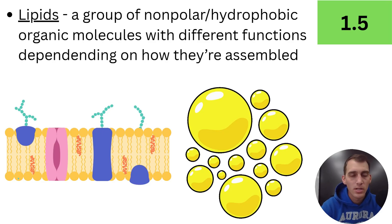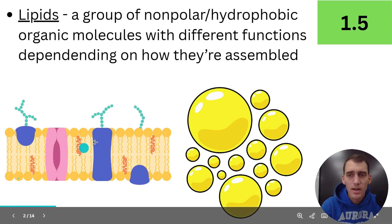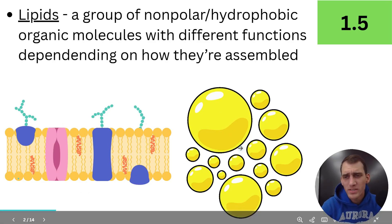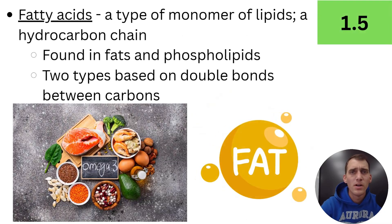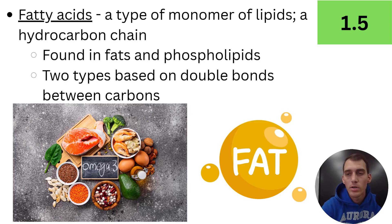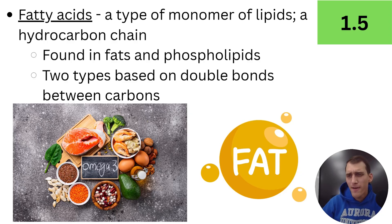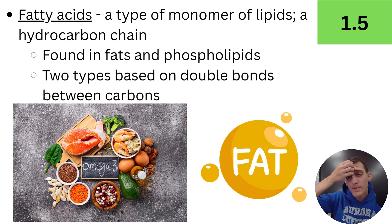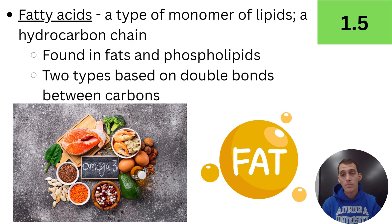Lipids are a mixed bag structurally and functionally. We can't really say that they all have one monomer, because fatty acids, while they are a monomer of lipids, are not the monomer of lipids. Like carbohydrates — the monomer of carbohydrates is a monosaccharide, and if I put a bunch of monosaccharides together I get a polysaccharide — but if I put a bunch of fatty acids into a chain together, I don't get a 'poly fatty acid' or something like that. So lipids are kind of weird, but fatty acids are a monomer because if you put some of them together with other molecules, you can form some very functional lipids.